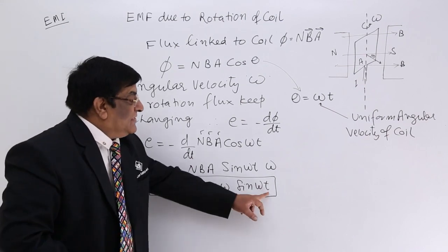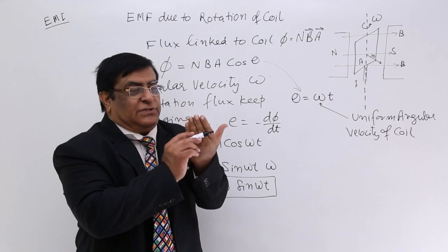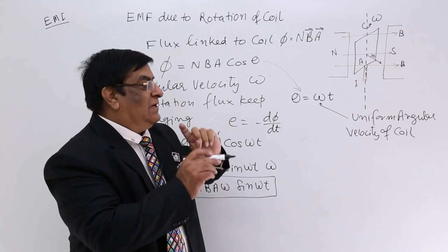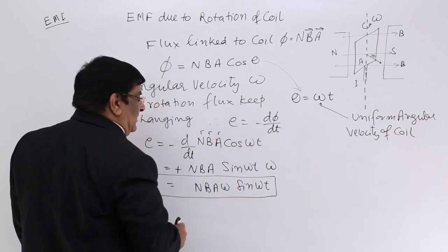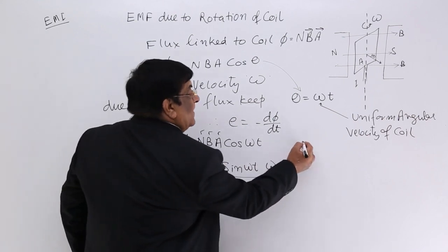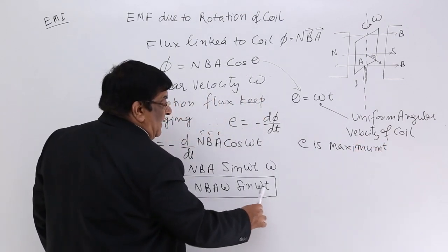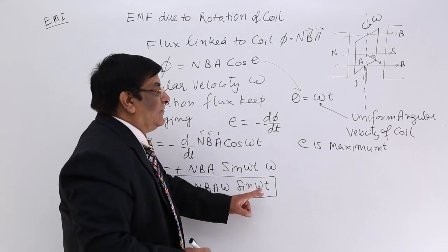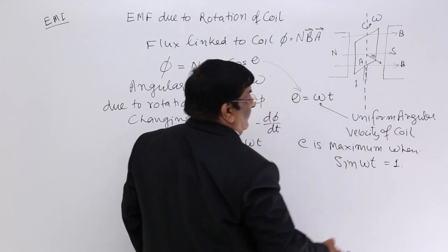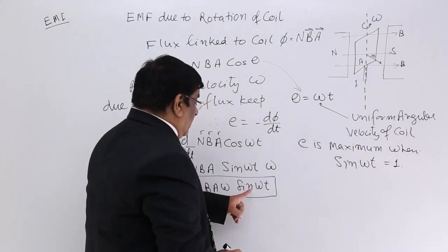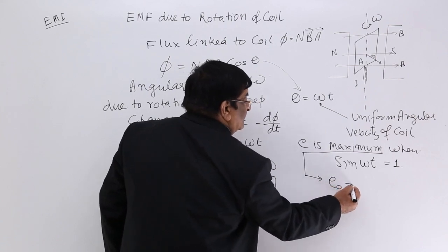This EMF keeps changing with time. Starting from 0 for a full rotation capital T. Now, when will E be maximum? E is maximum when the sin function is maximum. The maximum value of sin omega t is 1. So E is maximum when sin omega t equals 1, and this maximum EMF we denote by E₀ or E-max.